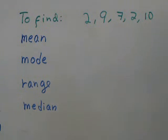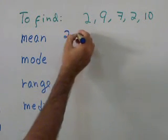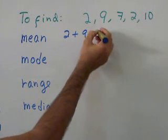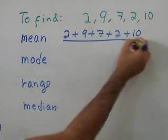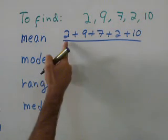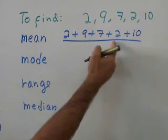Now we're going to solve it. So mean, you add all of them, so it's 2 plus 9 plus 7 plus 2 plus 10 divided by how many numbers you have. 1, 2, 3, 4, 5.